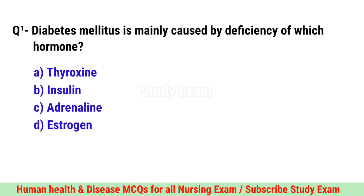Question No. 1. Diabetes mellitus is mainly caused by deficiency of which hormone? Correct option is B. Insulin.